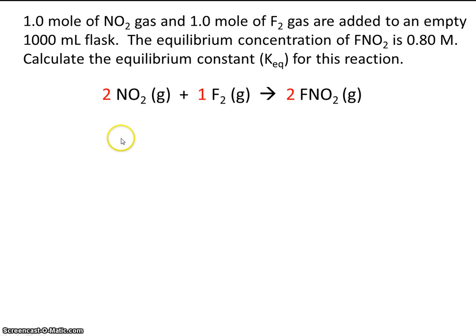Okay, so we have nitrogen dioxide and fluorine gas, and that's going to react to make this product here. One mole of nitrogen dioxide and one mole of fluorine are added to an empty 1,000 milliliter flask. The equilibrium concentration of FNO2 is 0.80 molar. Calculate the equilibrium constant for this reaction.